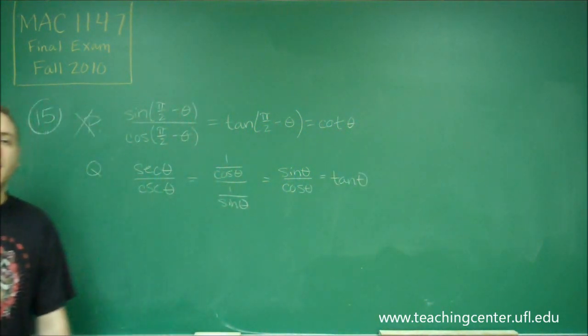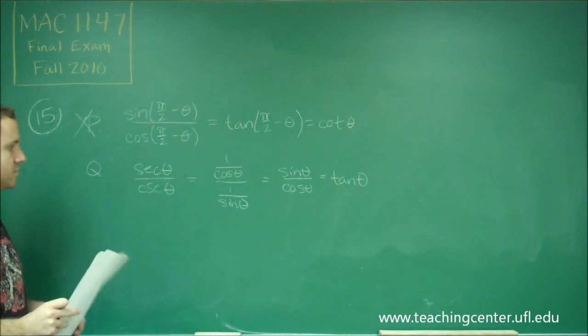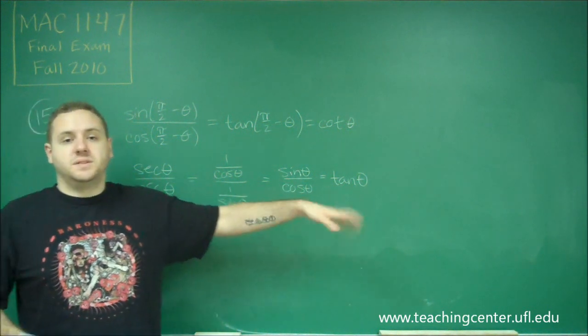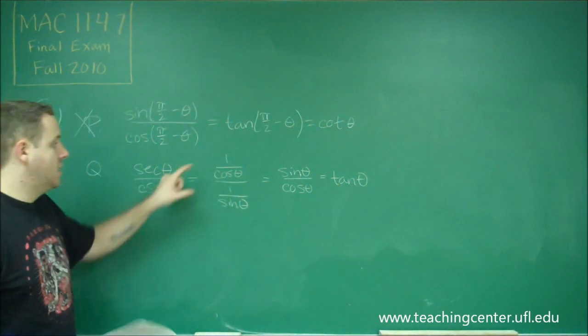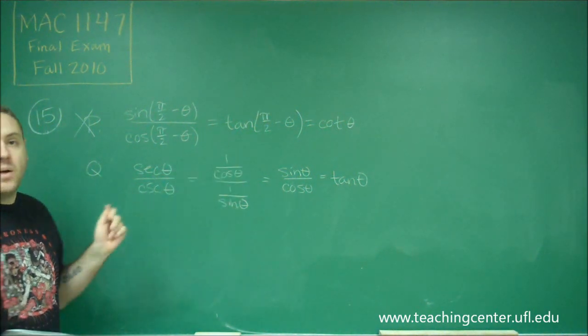But there's one problem that doing it this way we kind of skipped out on. For tangent of theta being sine over cosine, cosine of theta cannot be 0 because you would have undefined. We have cosine theta on the denominator here, so cosine theta cannot be 0. That works fine.